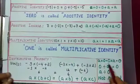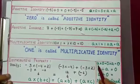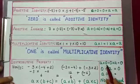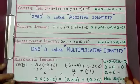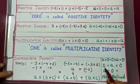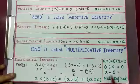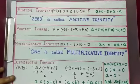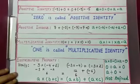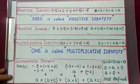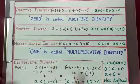Some more additional properties: for any integer a, a into 0 equals 0 into a equals 0 — any integer multiplied by 0, or 0 multiplied by any integer, gives 0. Also, if any integer is divided by 0, it is not defined. Try exercise 5 sums from the textbook based on these properties.